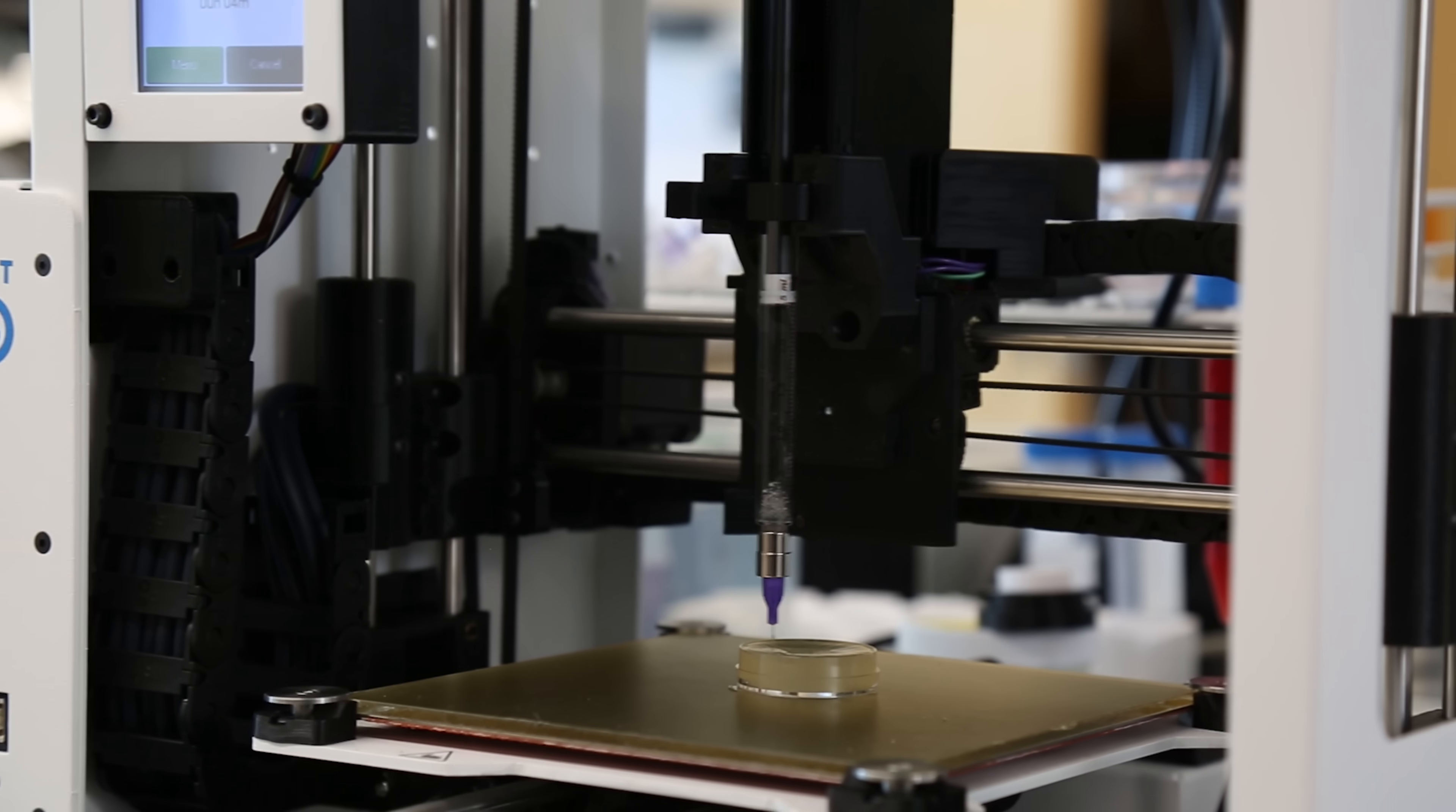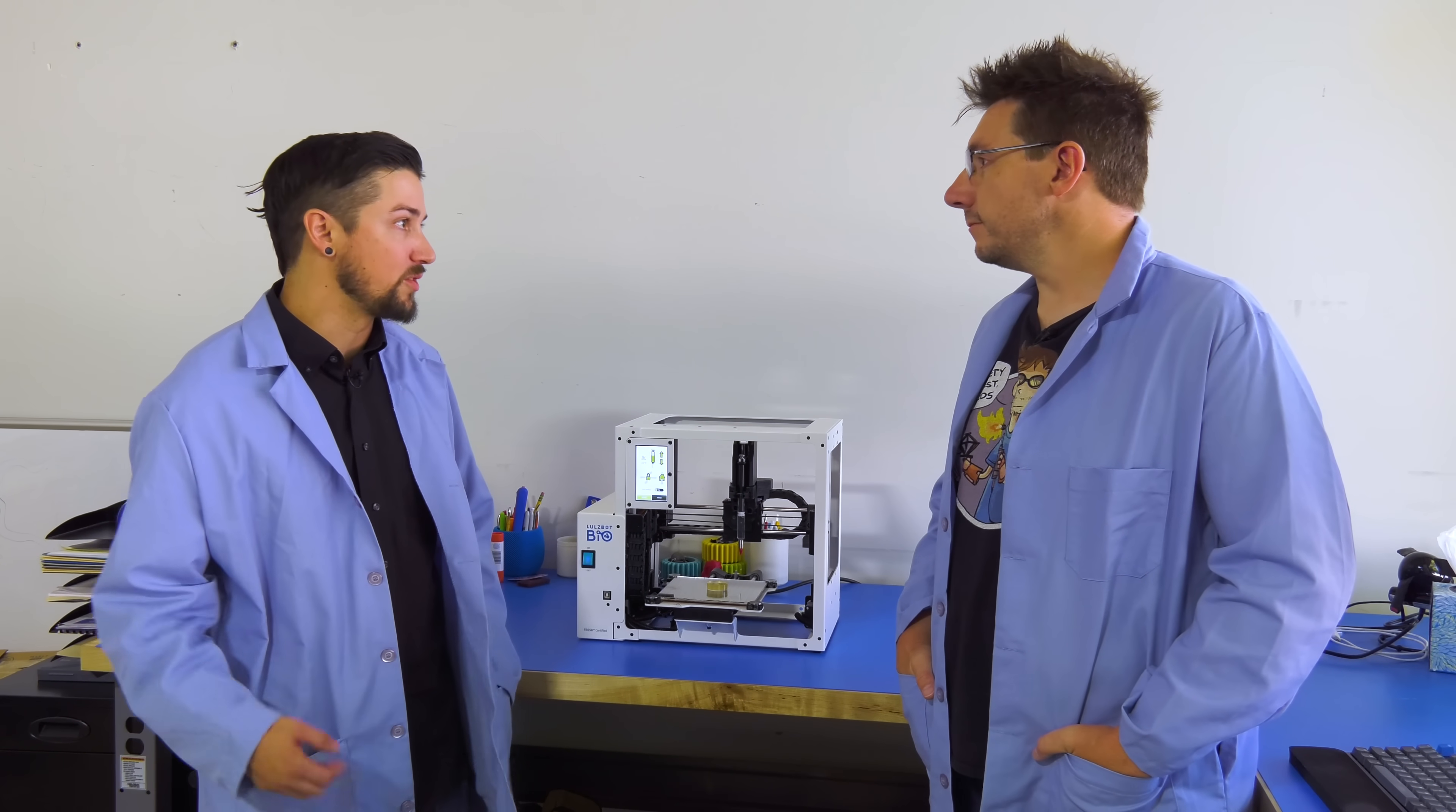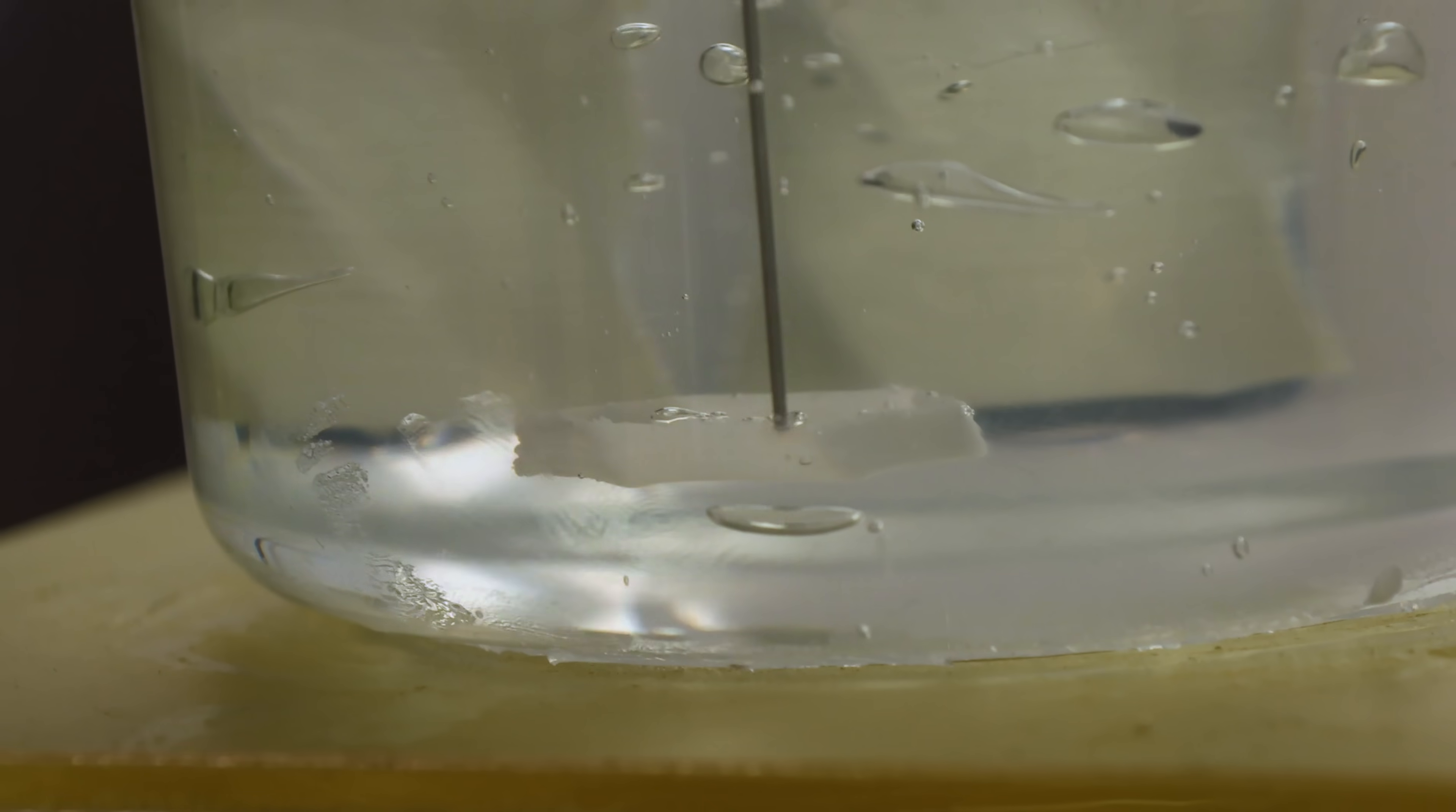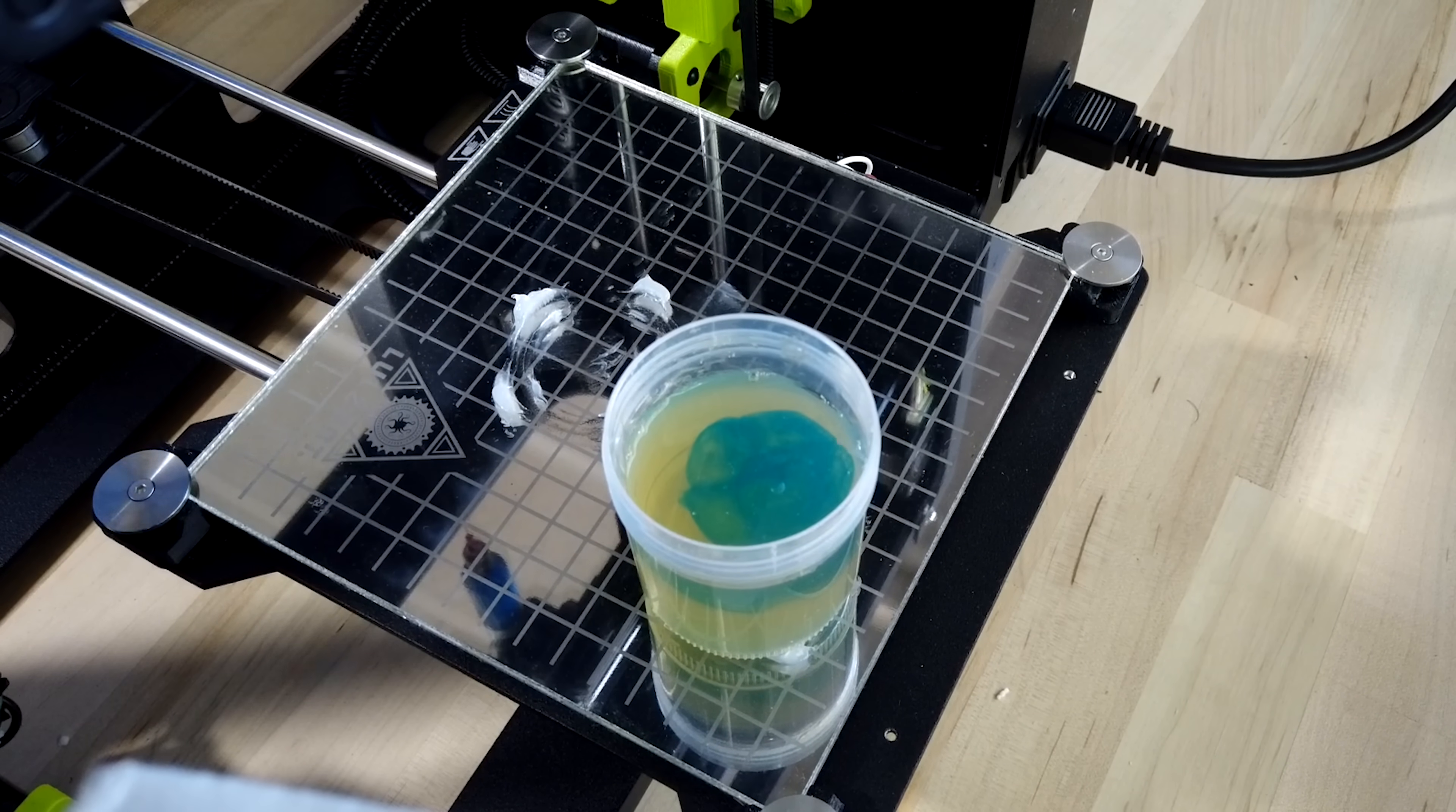So this is a LulzBot Bio. It is a FRESH certified 3D printer for printing unmodified collagen, bio inks, and other soft materials like thermosets. What does FRESH stand for? Freeform Reversible Embedding of Suspended Hydrogels. That's a lot of words. Basically, it is suspending a bio-type material or soft material into a gel. When you're done printing, you actually heat that gel up, and it will turn back into a liquid and release your print.